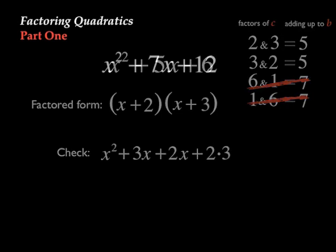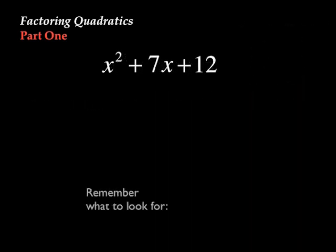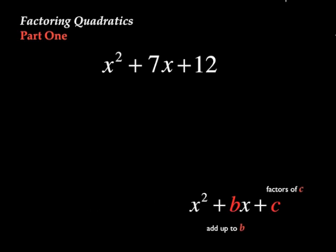One more example should work. We are looking for, once again, the factors of C which add up to the B term. In this case, we want the factors of 12 which add up to 7.